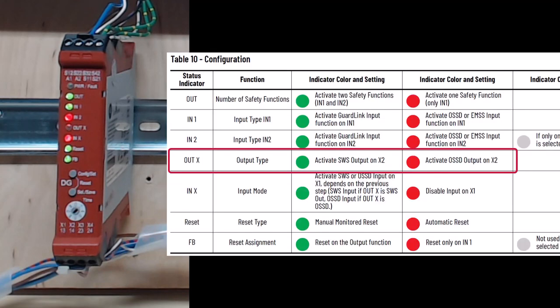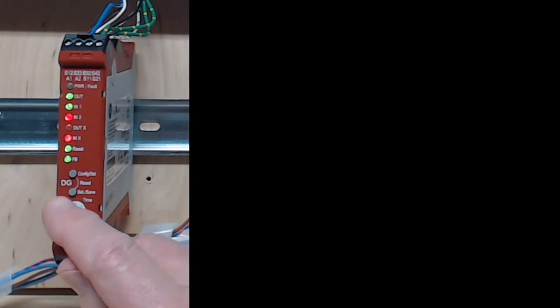The out LED is red, because you want to configure the X2 terminal to be an OSSD output. You would change it to green if you wanted the output to be a single wire safety output. Short press the select button while the color is red.